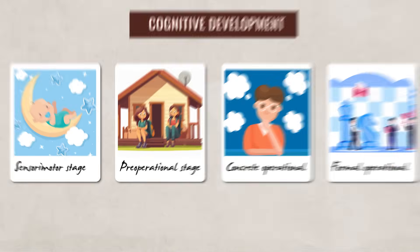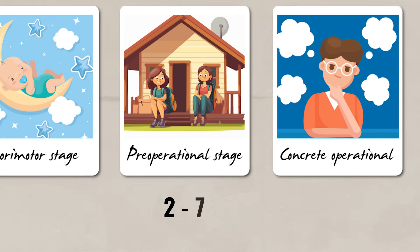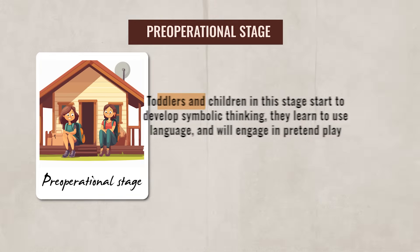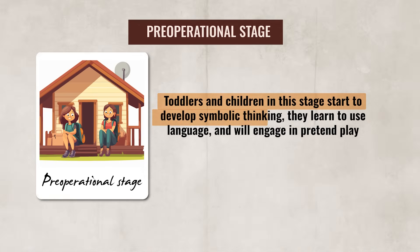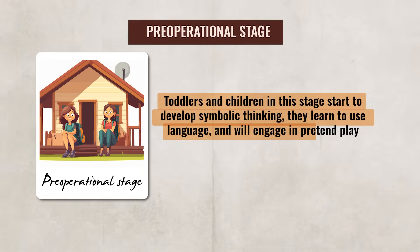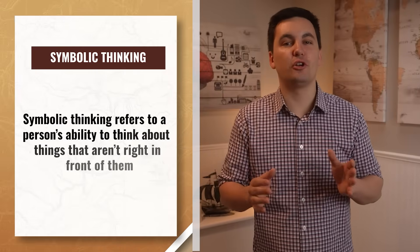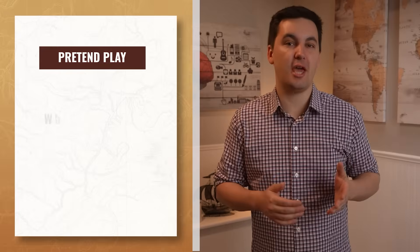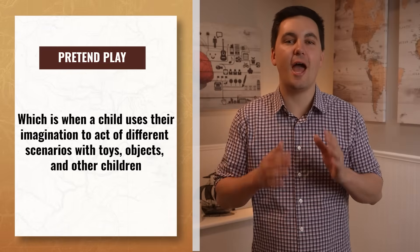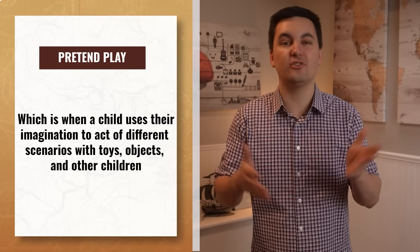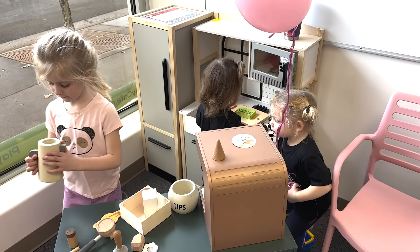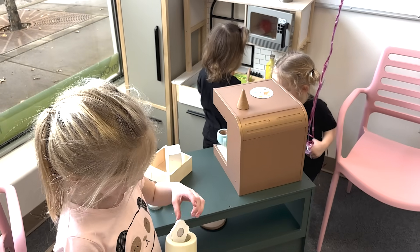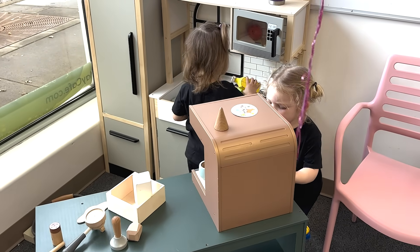The next stage generally starts when the child is around two years old and goes until around six or seven — this is the pre-operational stage. Toddlers and children in this stage start to develop symbolic thinking and learn to use language, engaging in pretend play. Symbolic thinking refers to a person's ability to think about things that aren't right in front of them. My three-year-old daughter, for example, has a super active imagination and is constantly acting out different scenarios and asking lots of questions about different aspects of life.